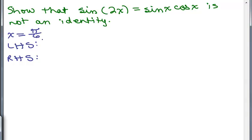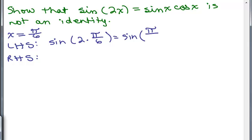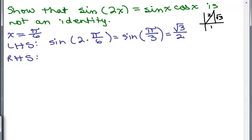Let's see what happens when we plug in pi over 6 for x. The left-hand side would be the sine of 2 times pi over 6, which simplifies — the 2 and 6 cancel — to sine of pi over 3. What's the sine of pi over 3? That's the 60-degree angle on the unit circle, with coordinates (1/2, √3/2). So the sine of pi over 3, which is y over r, equals √3/2. When I plug in x equals pi over 6, the left-hand side is √3/2.